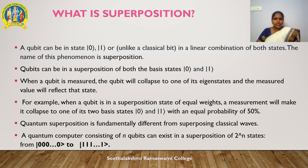If only half the unit of energy is used and the particle is isolated from all external influences, it enters a superposition of states, behaving as if it were in both states simultaneously. Superposition is defined as a phenomenon in which a qubit can be in state |0⟩, state |1⟩, or a linear combination of both states. When a qubit is measured, it will collapse to one of its eigenstates. For example, when a qubit is in a superposition state of equal weights, a measurement will make it collapse to one of its two basis states |0⟩ or |1⟩ with an equal probability of 50%.